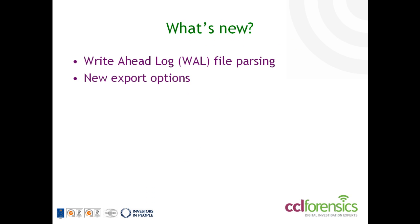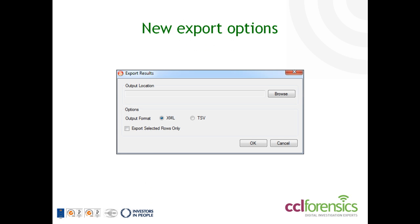One of the main requests we got from our users was the addition of new export options. So in version 1.1 of Epilog you can now export to a tab-separated value format as well as the traditional XML format, and also elect only to export selected rows.